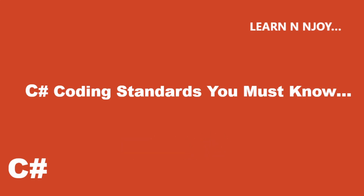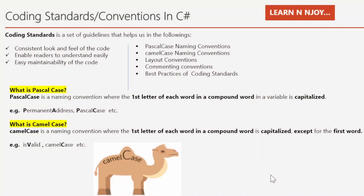Without any further delay, let's get started. Coding standard convention in C# — what is a coding standard? A coding standard is a set of guidelines that help us maintain a consistent look and feel of the code, enable readers to understand it easily, and ensure easy maintainability. In this video we are going to learn about Pascal case naming convention, camel case naming convention, layout convention, commenting convention, and best practices of coding standards in C#.